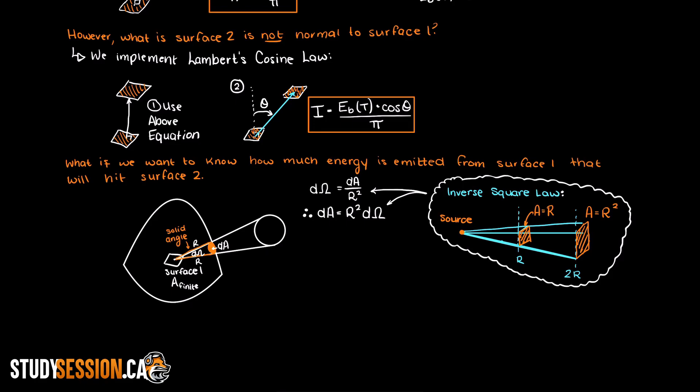So we can write that the differential area we are going to hit is equal to the radius squared times the differential solid angle.